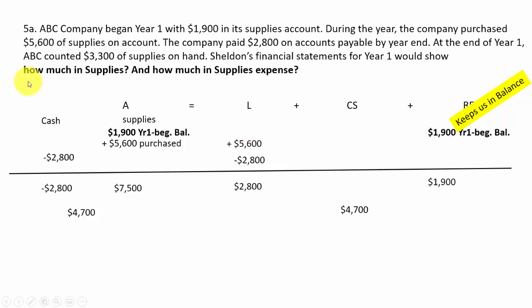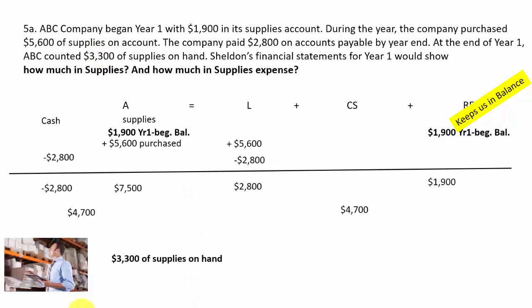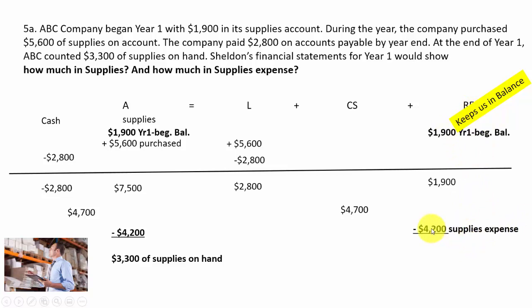Since we need the supplies balance to be $3,300 but currently have $7,500, we must adjust it down by $4,200. That means we've used $4,200 worth of supplies. Asset supplies go down $4,200 and supplies expense is recorded under retained earnings by $4,200. The answer: supplies on hand equals $3,300, and supplies expense equals $4,200.